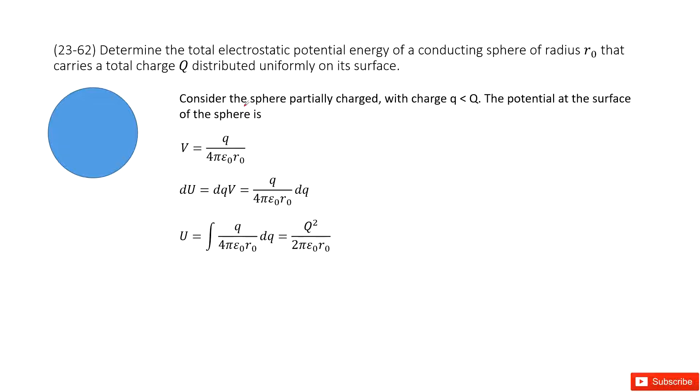We need to determine the electric potential energy for a conducting spherical object of radius r₀. The total charge Q is uniformly distributed on its surface. The key words are conducting and surface, which tell us the charge is only on the surface.